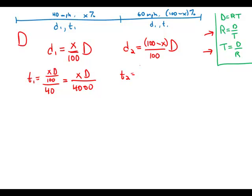Time 2 is this distance, divided by the rate in that leg of the trip, which is 60 miles an hour. Again, numerator stays the same, 100 minus X times D. And in the denominator, we multiply 60 times 100 is 6,000.